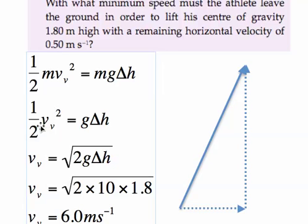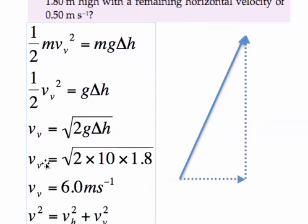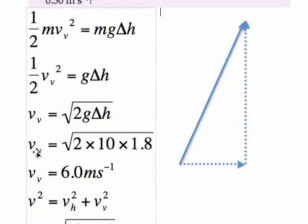So once again mass cancels out. Half v squared equals g delta h. So solving for v we find that the vertical velocity equals six meters per second. So he's going to need to leave the ground with six meters per second straight up.